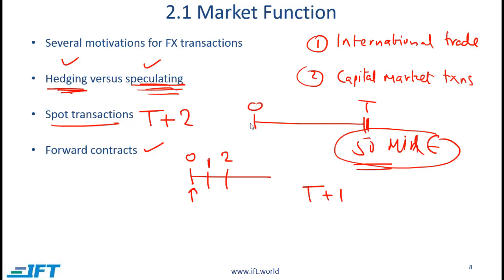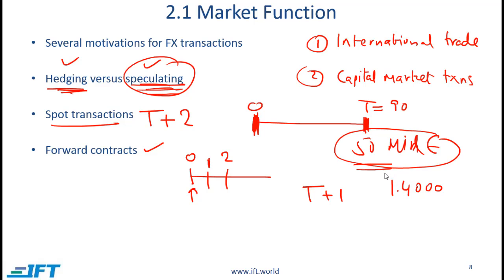Forward contracts are where you agree today on a transaction that will happen in the future. In the hedging example, at time zero we are locking in a price for euro. We know we will need 50 million euro after three months, and we are concerned the euro will become too expensive, so at time zero we lock in a price — say 1.400 euro to one dollar. This is a forward transaction: the amount per euro is paid at settlement, but the contract is signed at time zero. This material is also covered in the derivatives section of the curriculum.